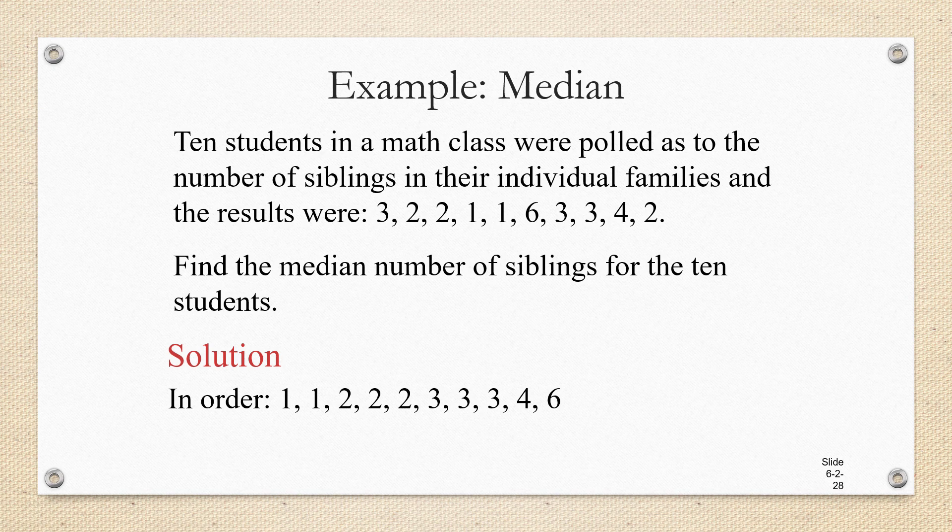Now, there were 10 students polled, so I have 10 data values, which is an even number. Remember, the median needs to be in a position such that half of the data values are below and half are above. So we're going to look at the 5 and a half position, where 5 of the data values are below and 5 are above. So the median is going to be the mean of the two values on either side. 2 plus 3 divided by 2 is going to be 2.5. So 2.5 is the median number of siblings.